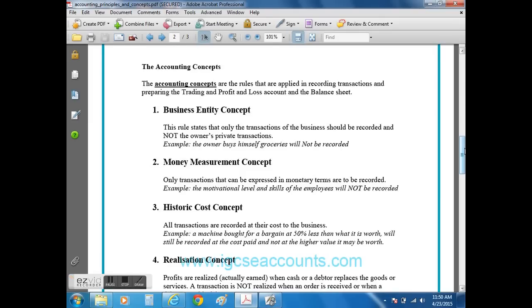The second rule is the money measurement concept. This rule basically says that if an occurrence or an event or an asset in a business cannot be given a financial value, in other words it can't be given a money value, then it should not be recorded by the accountant. So motivation, for example, would not be recorded by the accountant because it's impossible to put a value on motivation.